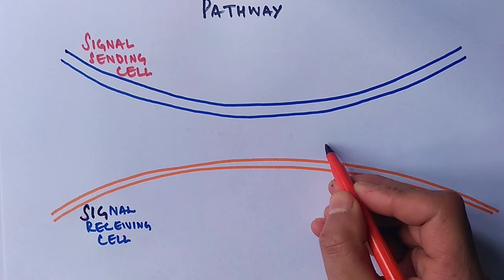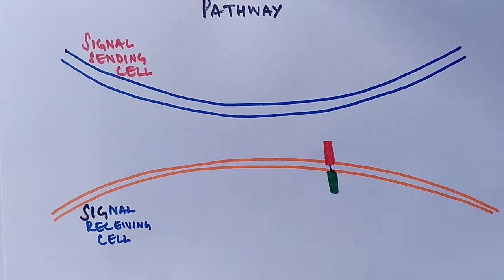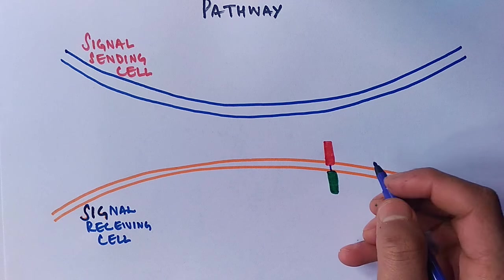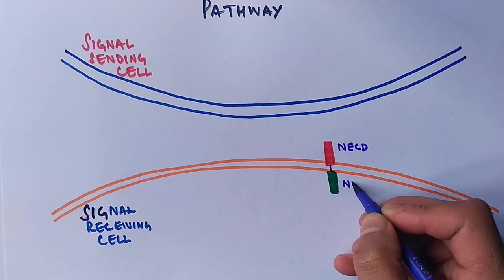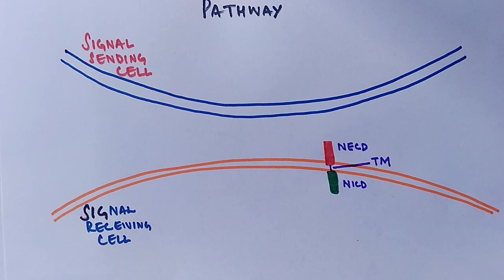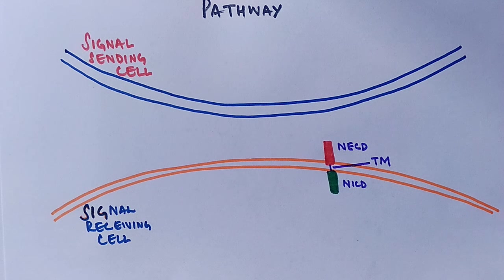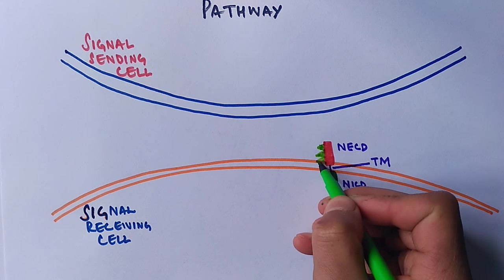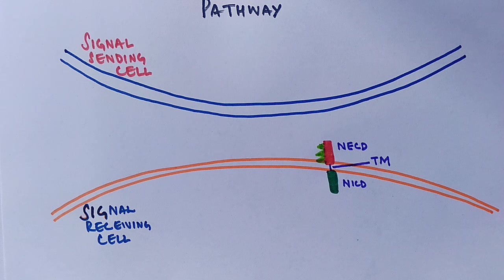We have a signal receiving cell with a NOCH receptor within its membrane. This NOCH receptor has two domains: NECD (NOCH extracellular domain) and NICD (NOCH intracellular domain), interconnected by a transmembrane domain. In this diagram you can see NECD in red color and NICD interconnected by the transmembrane domain. This NOCH receptor is processed in the Golgi and endoplasmic reticulum through an S1 cleavage process.